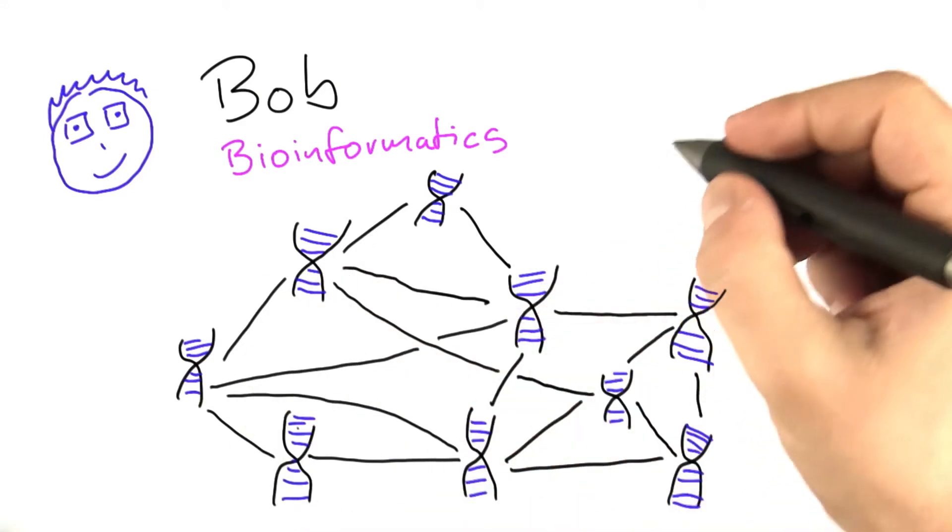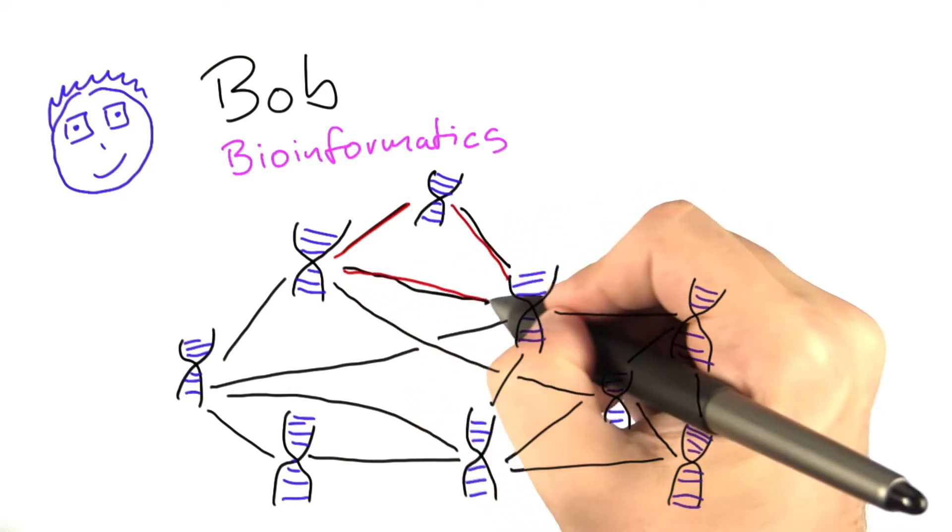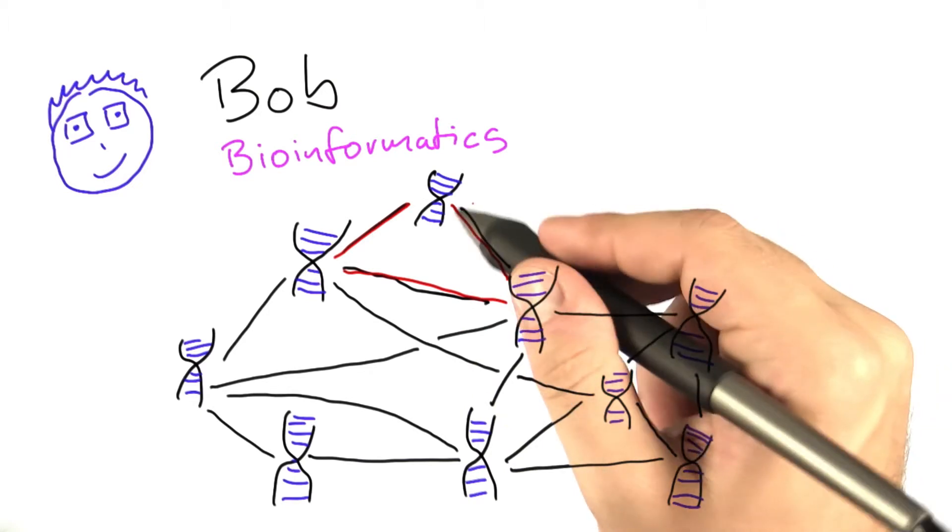So I'll just give you one example. For example, this here, these three genes are all connected to each other. So this is kind of the type of group that he's looking for.